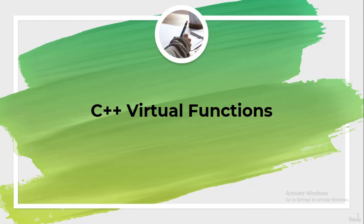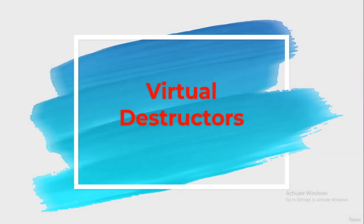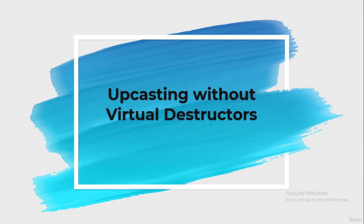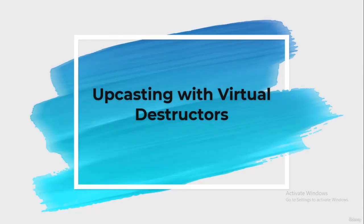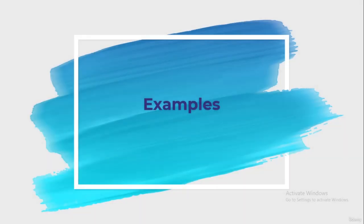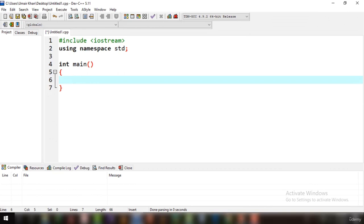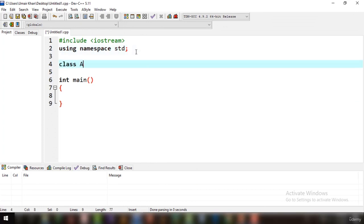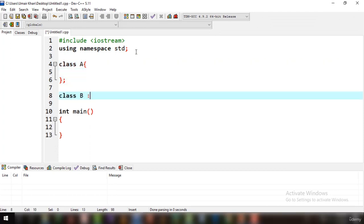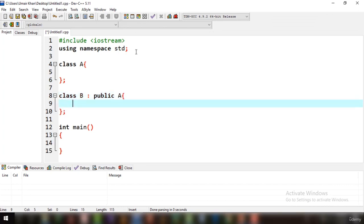Welcome to another tutorial on virtual destructors. Destructors in the base class can be made virtual. When upcasting is done, the destructor of the base class must be made virtual for proper destruction of the object. We will see examples of upcasting without virtual destructors and then with virtual destructors, so you can feel the difference.